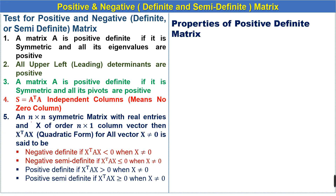For an n×n symmetric matrix A with real entries and a column vector x of order n×1, the product x-transpose times A times x is called the quadratic form. For all non-zero vectors x, the matrix is said to be negative definite if this product is less than zero, and negative semi-definite if the product is less than or equal to zero.